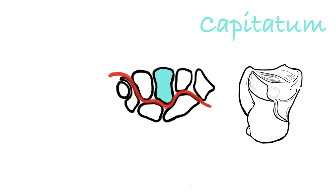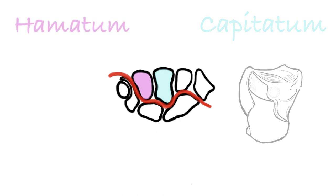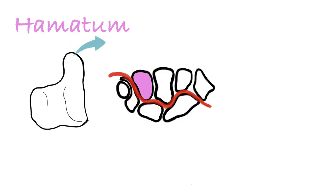Hamate is a wedge-shaped bone and has a hooked process which named as hook of the hamate. It is known as hamulus ossis hamati in Latin. Hamulus means hook, ossis means bone, hamati means hamate. So we can translate this as hook of the hamate bone, and ulnar nerve is close to the hook of the hamate.